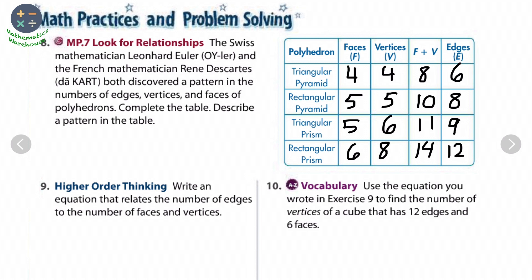What did you notice? Yes. The number of edges is two less than the sum of the number of faces and vertices. So describe the pattern. So we can say, the number of edges is two less than, if you subtract two every time, you would get the number of edges.